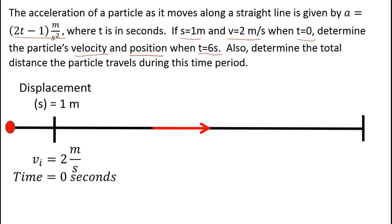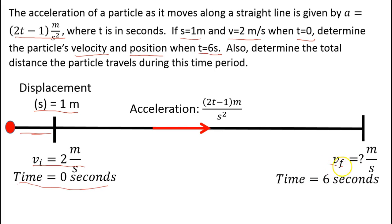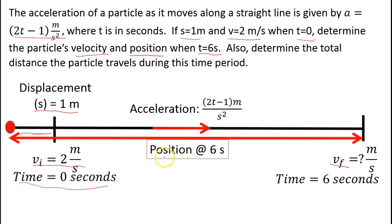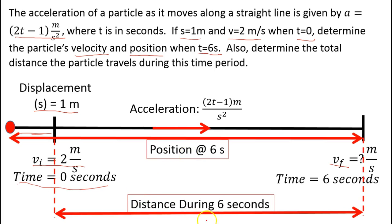So let's put up a diagram. Here we have the origin — this is where the thing starts off — this is the path, the straight line. This is the point where we start the clock, where t is equal to 0 seconds. At 0 seconds, the initial velocity is 2 meters per second, and we know the displacement at this point is 1 meter. We don't know how far it's going to go, and we're only concerned about this during a period of 6 seconds. That window of time is going to be really important as we travel through this problem.